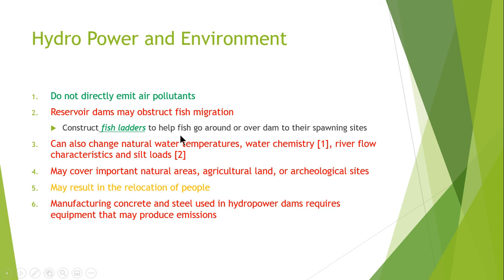The natural water chemistry also changes when water becomes still in a reservoir. When water is not moving, it is unable to absorb oxygen, causing the water chemistry to change. When this water is released into rivers, it can alter river flow and the contaminated water can also pollute the river.